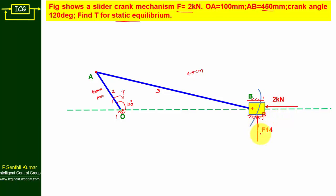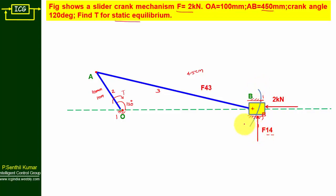First I am going to mark F14 — the force offered by the fixed link on the slider. Here, 1 represents the force offered by link 1, and 4 represents the link it acts on, so this is F14. Since there is no vertical movement of the slider, there must be a reaction force along the vertical direction, which is marked as F14.